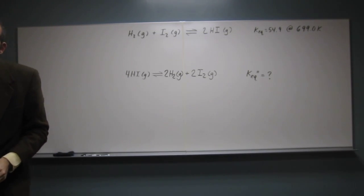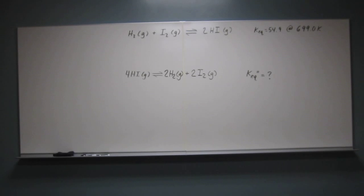So the question itself asks us, the equilibrium constant for the reaction of hydrogen plus iodine goes to 2 hydrogen iodide is 54.9 at 699.0 Kelvin.